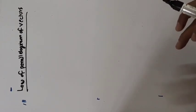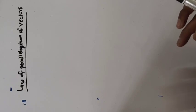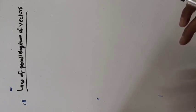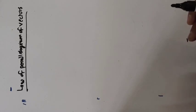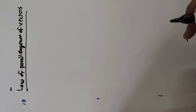In the previous lecture we studied vector operations: multiplication of a vector by a scalar, addition and subtraction of vectors, and the triangle law of vector addition. Today we are going to see the next law, that is the law of parallelogram of vectors. This is another geometrical method for adding two vectors.